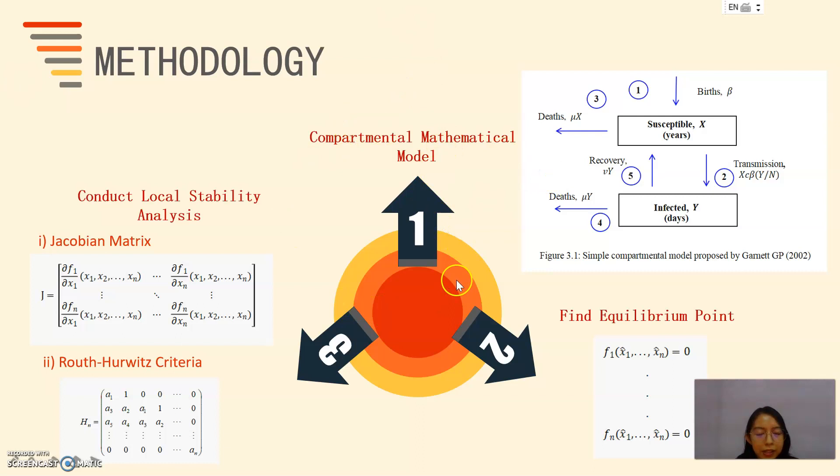There are three methodologies that are used in this study. The first one is compartmental mathematical model proposed by Garnet. The second one is to find equilibrium point. To find the equilibrium point, we need to assume all the ordinary equations in the system equal to zero. And the third one is to conduct local stability analysis by using Jacobian matrix and the Routh-Hurwitz criteria.